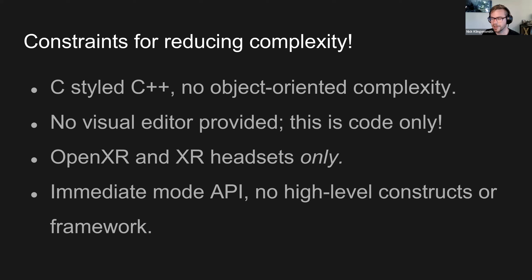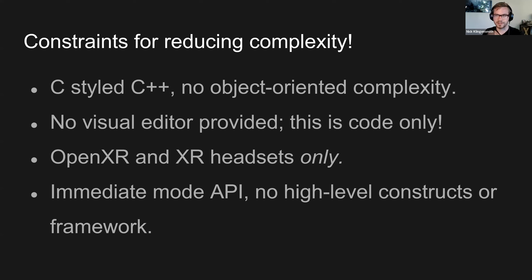StereoKit is immediate mode. If you think of a game engine with a scene graph and all these game objects and components, it has a very high-level representation it stores for you. StereoKit doesn't do that. If you want a model drawn on screen, you say model.Draw — and you draw it every frame. If you don't call that, it doesn't get drawn. This is actually really powerful because a lot of the time you don't need these high-level abstractions. If you want a forest, you just have an array of which tree goes where, loop through it, and draw the tree there. You don't need a whole scene graph — all you need is an array. This lets you describe the complexity of your application the way you want and bring your own architectural concepts.